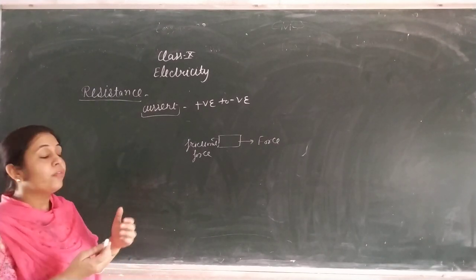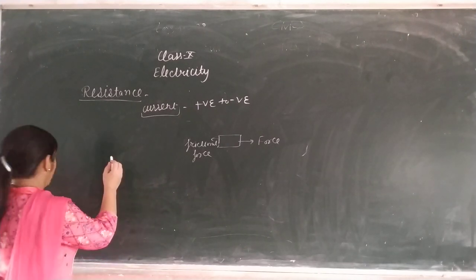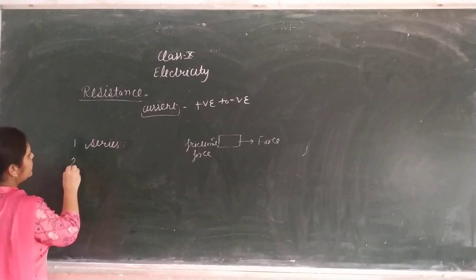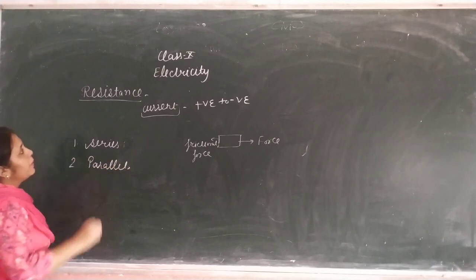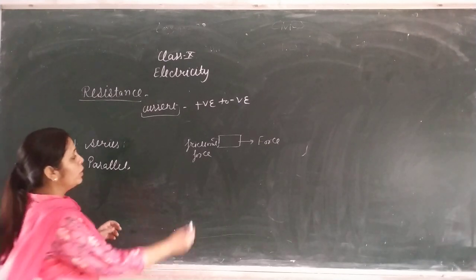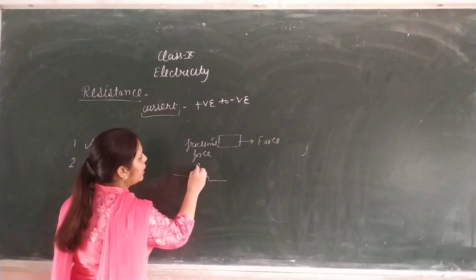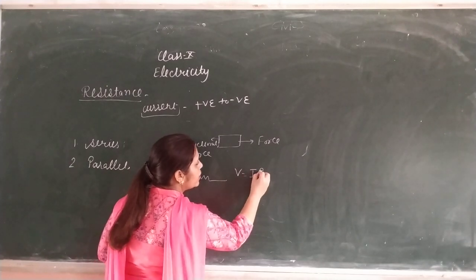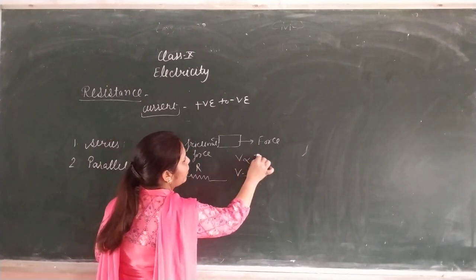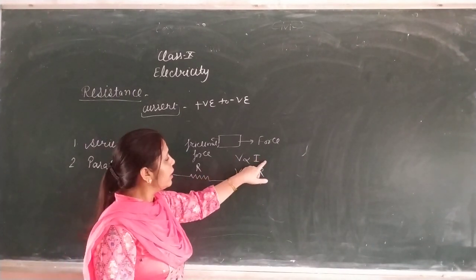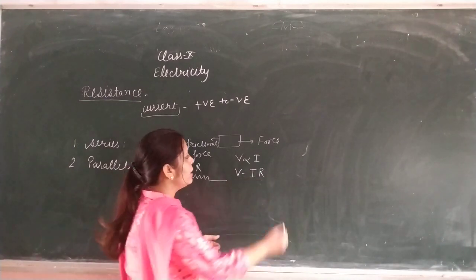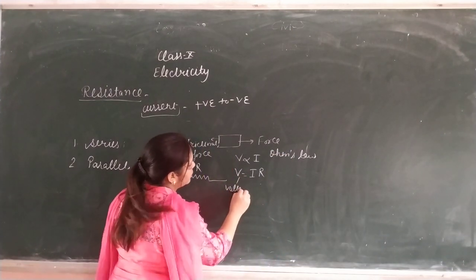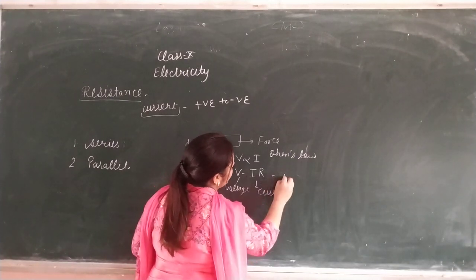You can say that resistance is the opposition offered by a conductor to the flow of current. What does it do? It will stop the current. This is the combination of resistance. There are two combinations: first is the series combination and the second is the parallel combination. How do you represent resistance? This is our symbol of resistance, called R. From Ohm's law, we have V is directly proportional to I, V equals I into R, where V is the voltage, I is the current, and R is the constant called resistance.